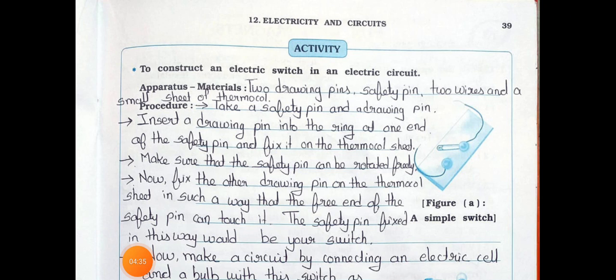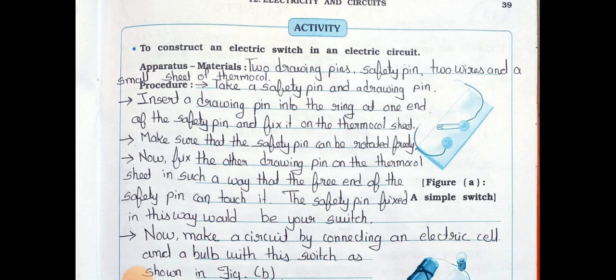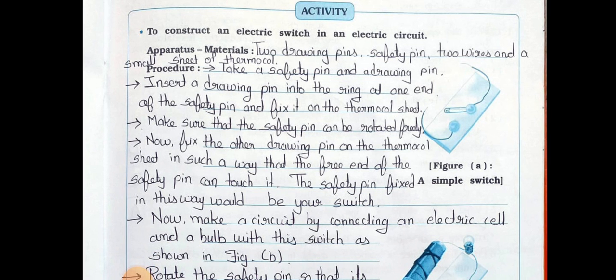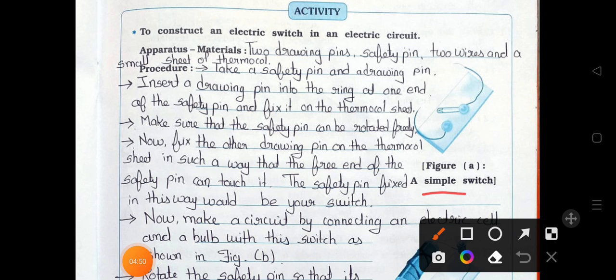Now see the activity: to construct an electric switch in an electric circuit. Apparatus and materials: two drawing pins, two wires, and a small sheet of thermocol. Procedure: take a safety pin and a drawing pin. Insert a drawing pin into the ring at one end of the safety pin.